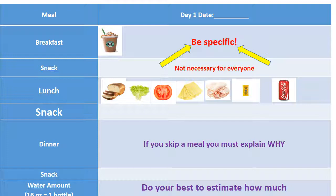Notice that I put in three options for snack, and I also wrote that it's not necessary for everyone. If you are somebody who eats a snack, you're simply going to record what you're eating. If you are not someone who eats a snack, then you'll just leave those areas blank. However, if you skip a meal like breakfast, lunch, or dinner, you must explain why. If you look next to the dinner column, I wrote that out specifically — if you skip a meal for whatever reason, you simply need to write down why. But you do not need to do that for the snacks.